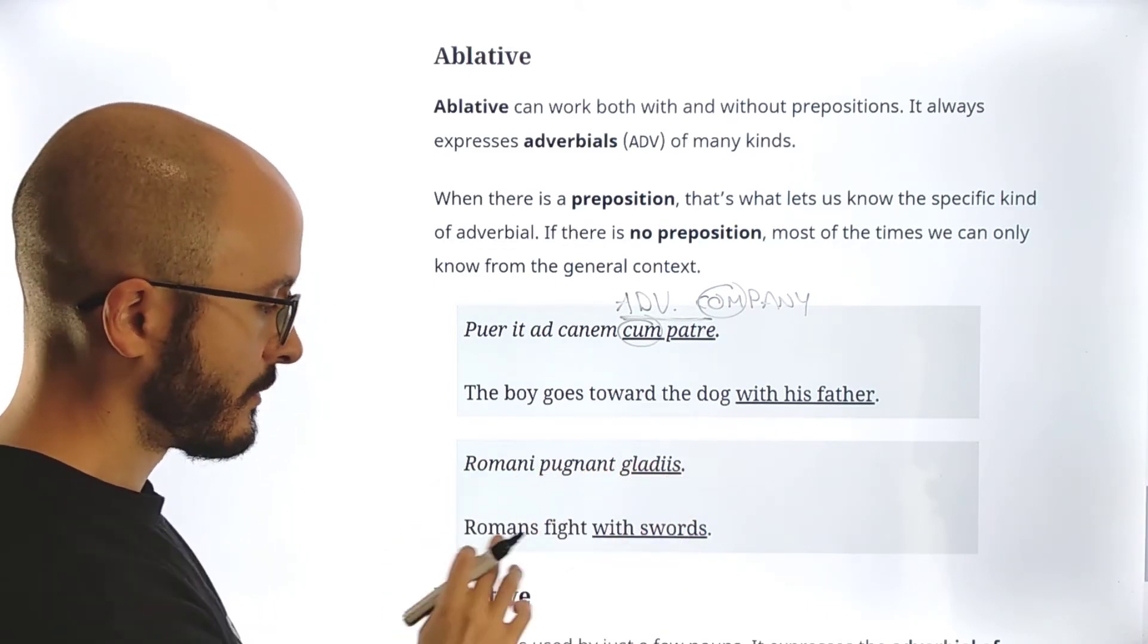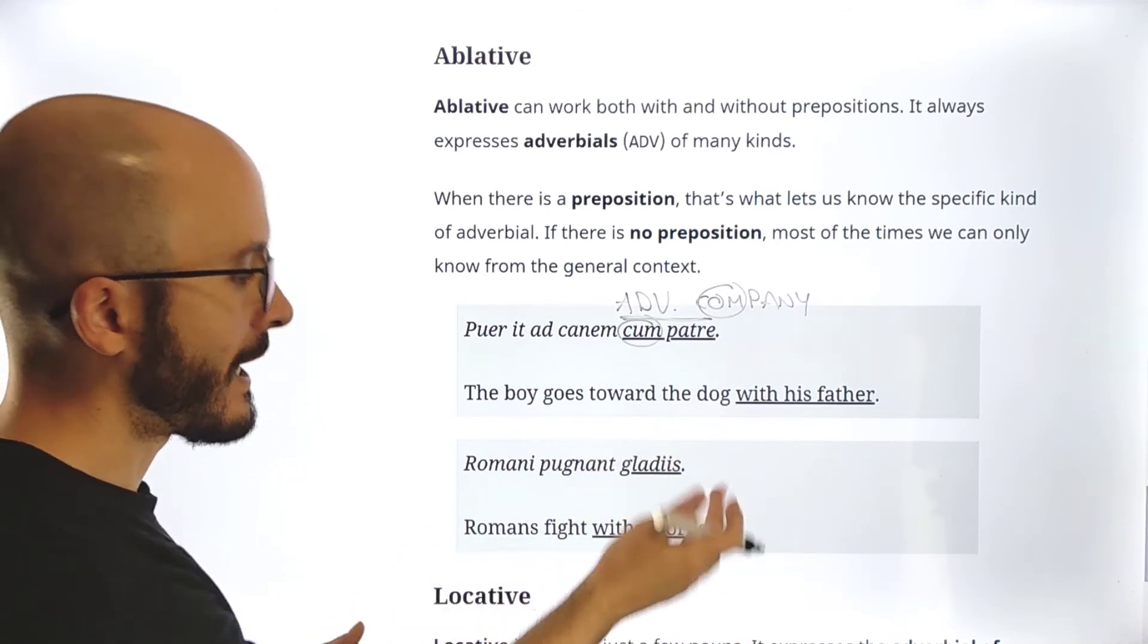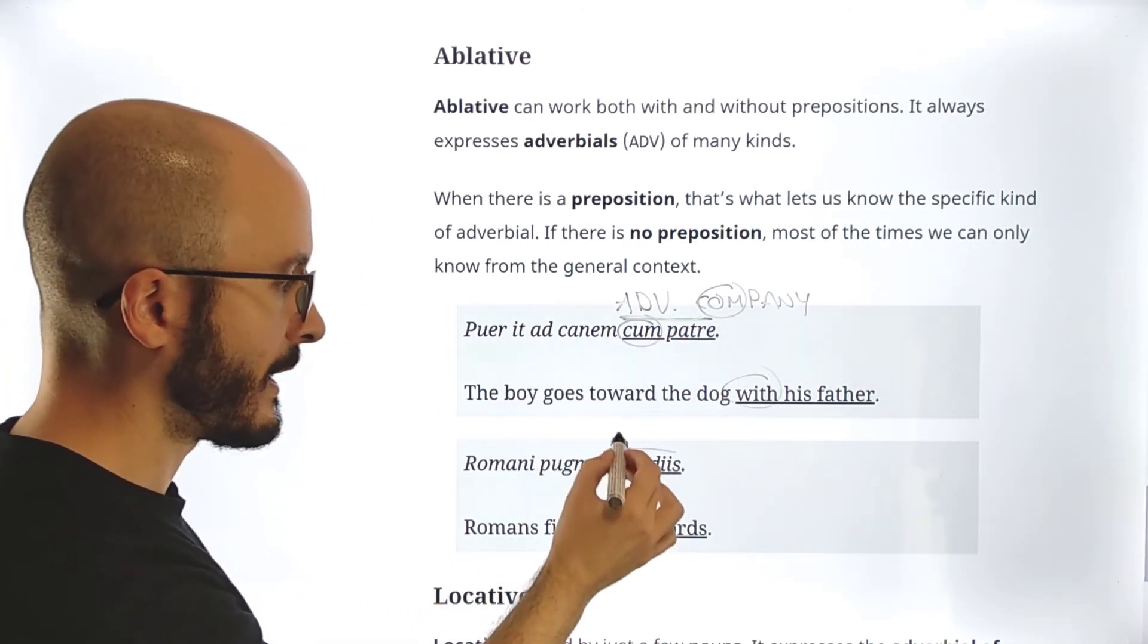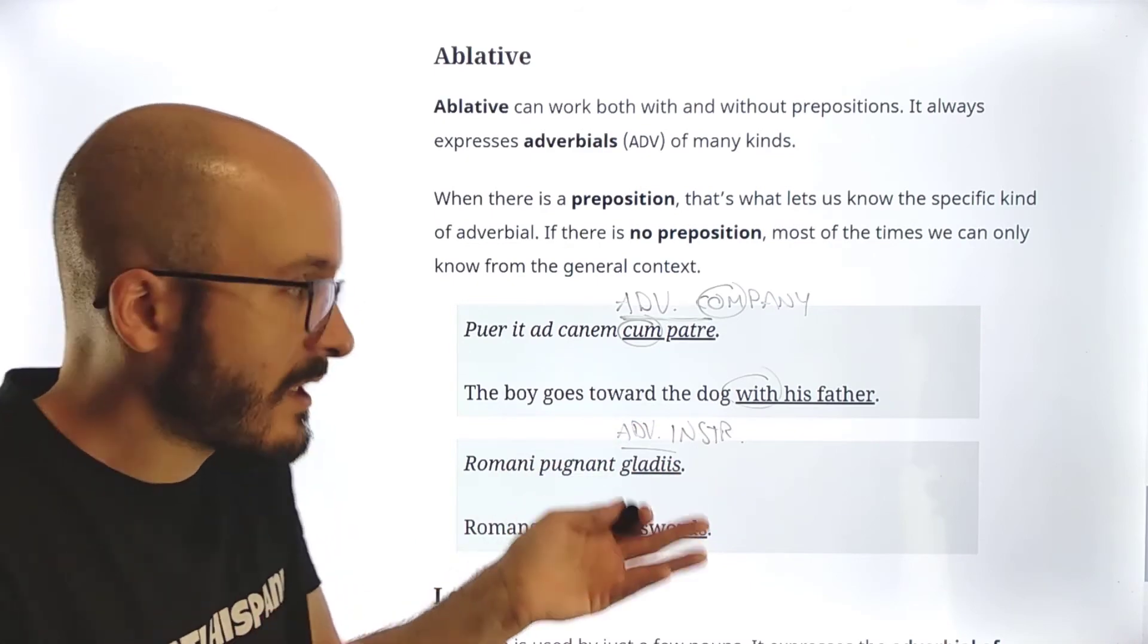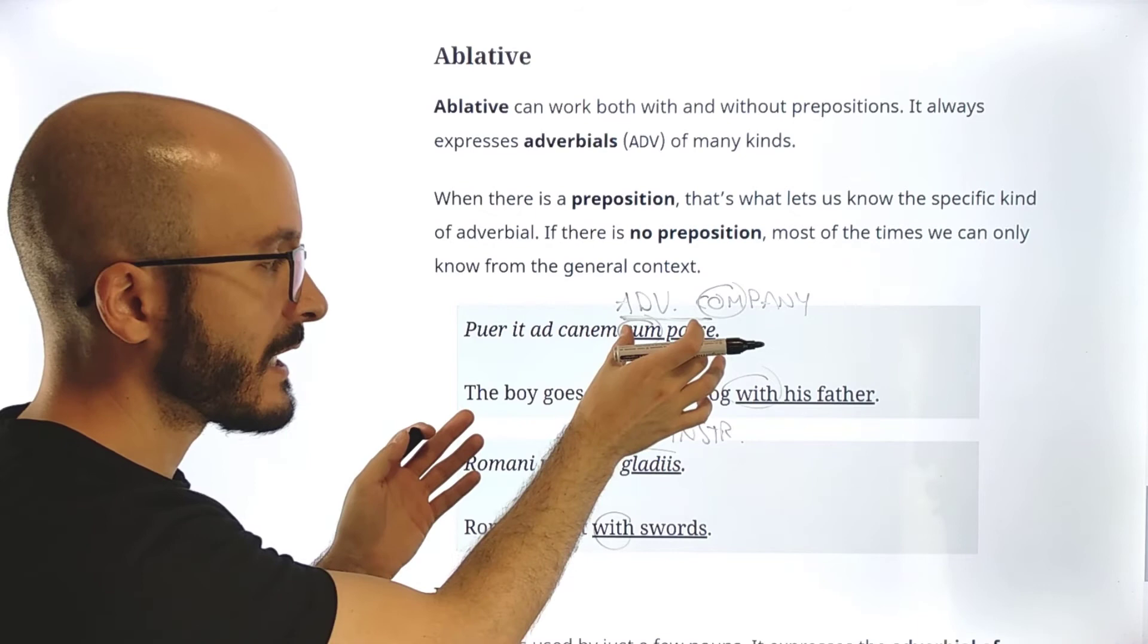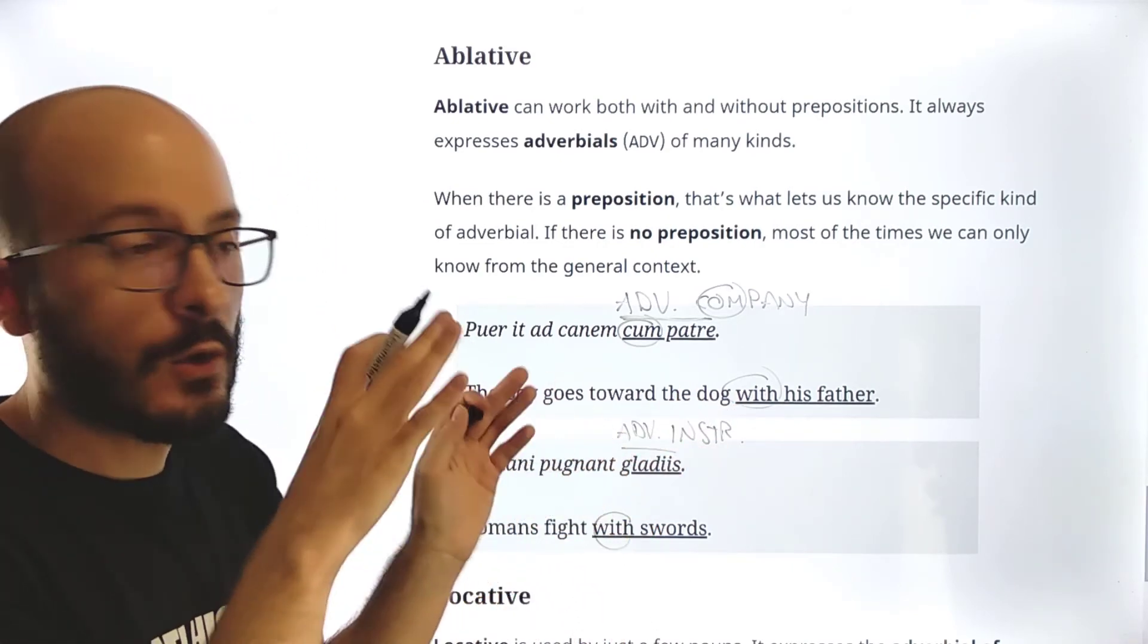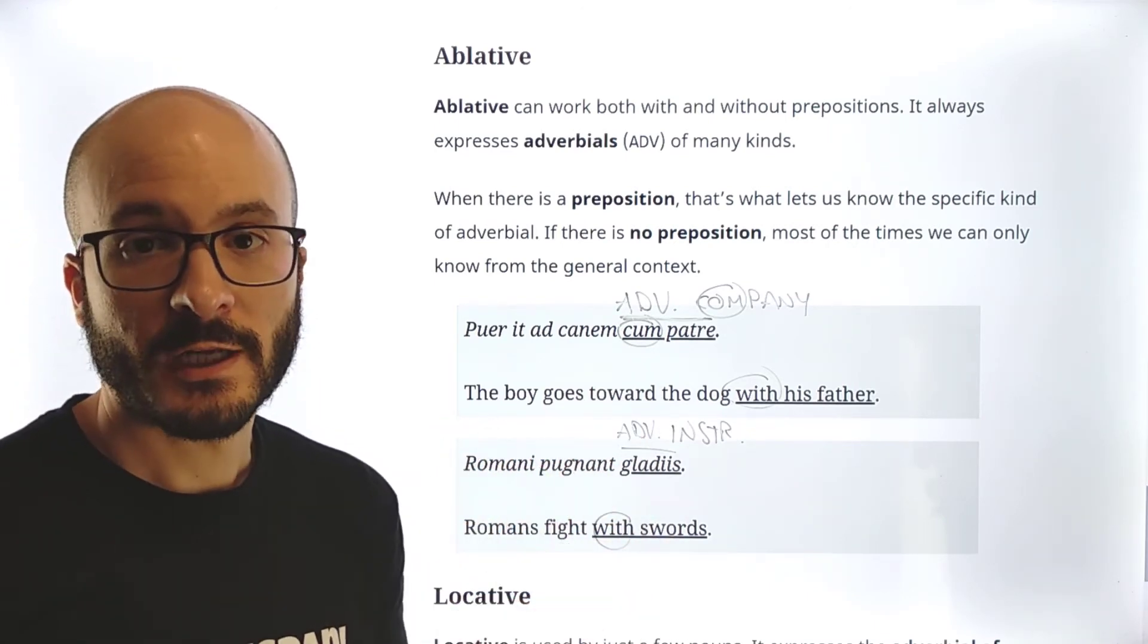Then here, Romani pugnant gladiis. Romans fight with swords. And now you might say, oh my god, why do we have with, we have with, but here is with preposition, here no preposition. Why? Because this is not an adverbial of company. This is an adverbial of instruments. It just happens that in English we use the same preposition for both adverbials, but this is the company, and this is the object. This is the tool. This is the instrument. In English, we use the same preposition. In Latin, we see that the company, preposition cum, instrument, no preposition at all.